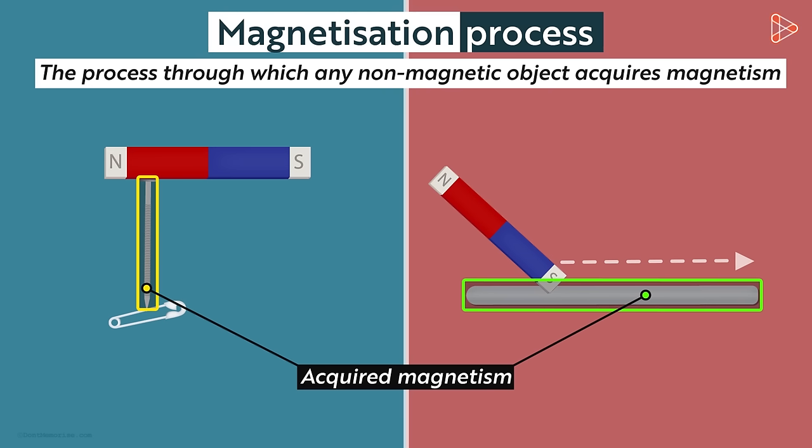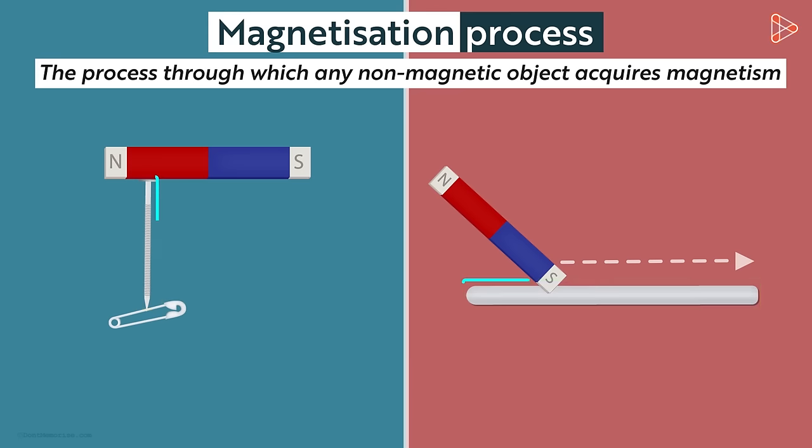This can also be defined as a process to magnetize any non-magnetic object. So in these processes we are magnetizing the ferromagnetic objects. Now there is one more way in which we can magnetize these objects.